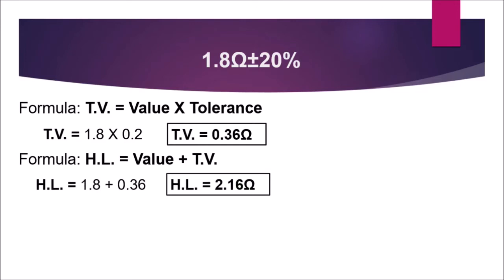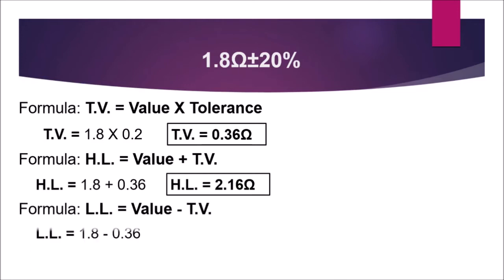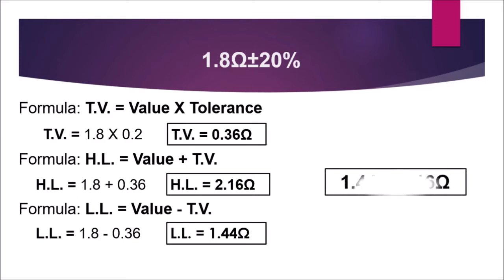For the lower limit, value minus tolerance value: 1.8 minus 0.36 gives us 1.44 ohms. So the tolerance range is 1.44 ohms to 2.16 ohms. This is the range to indicate that the resistor is good. If the measurement is beyond this range, the resistor is out of tolerance and needs to be replaced.